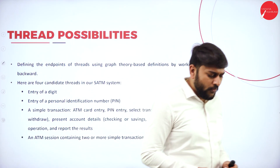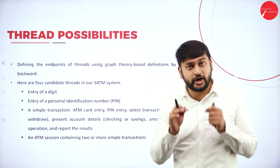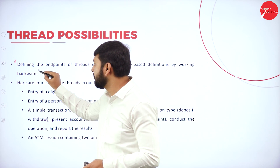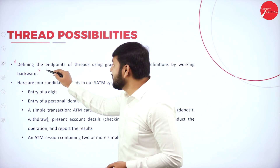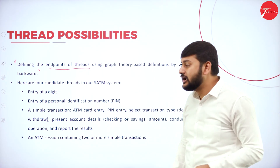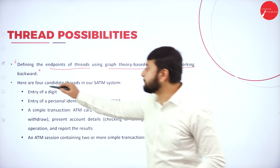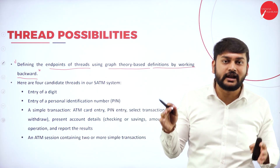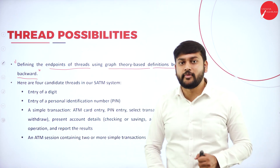Now let's discuss threat possibilities. This is very important. Defining the end point of a threat — where exactly it stops, what is the capacity of the threat — is done using a graph-theory-based definition by working backward. We are trying to define or understand the end point of a threat using a concept of graph theory. In this scenario, we have four candidate threats in our SATM example. We are considering the SATM system to explain this concept with four different scenarios.